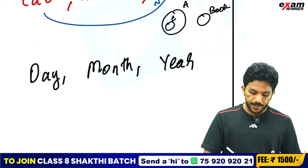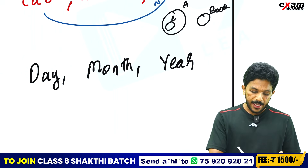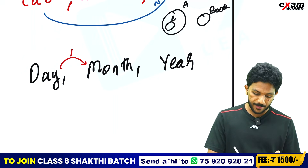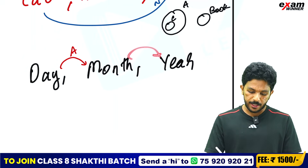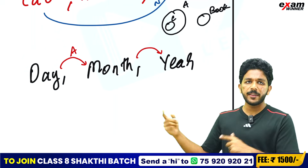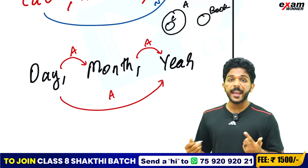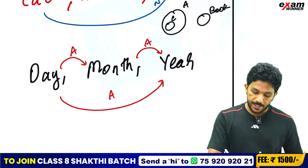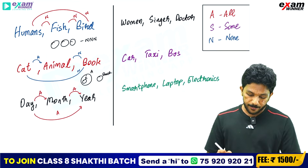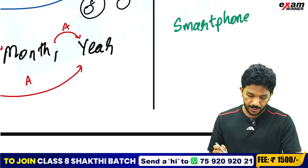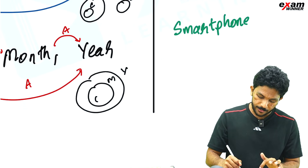Every day is part of a month. Every month is part of a year. So day is inside month, and month is inside year. This gives us A-A-A — all nested inside each other. The pattern is year contains month, month contains day.